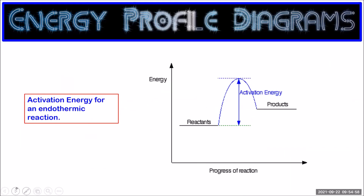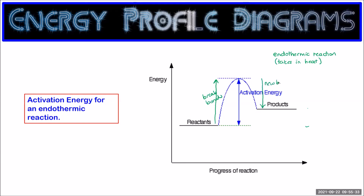This energy profile shows an endothermic reaction — this reaction actually takes in heat. You still require energy to get to the transition state to break the bonds, and energy is still released when new bonds form. The difference here is that we did not get as much energy out when the new bonds formed as when we broke the existing bonds, so overall this reaction takes in energy from its surroundings — we might feel the test tube get cold.